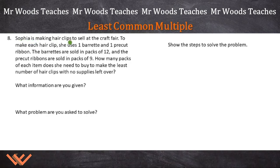First thing is, what information are you given? Next is, what problem are you asked to solve? And finally, show the steps to solve the problem. So let's go back and reread this and pull out some important information. Sophia is making hair clips to sell at the craft fair. To make each hair clip, she uses one barrette and one pre-cut ribbon. That's for each one. The barrettes are sold in packs of 12 and the pre-cut ribbons are sold in packs of nine. How many packs of each item does she need to buy to make the least number? So this is the least number of hair clips with nothing left over. So no supplies left over. What's given? I'm going to say barrettes. That's going to be packs of 12. And ribbons are in packs of nine.